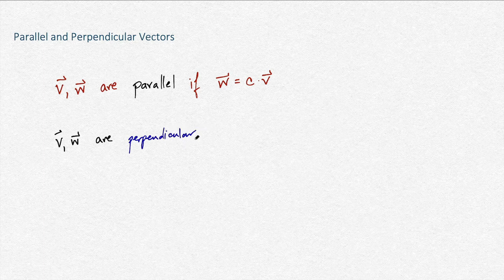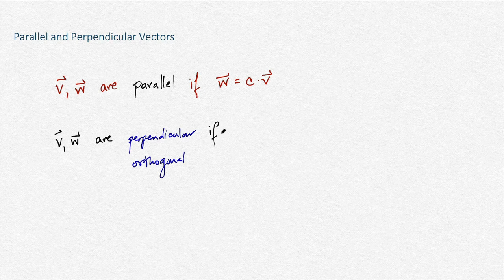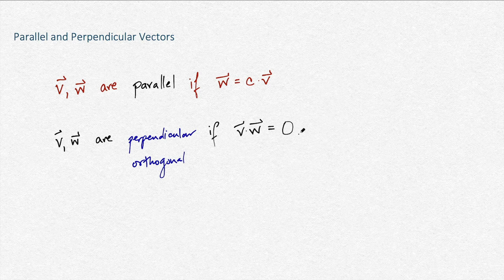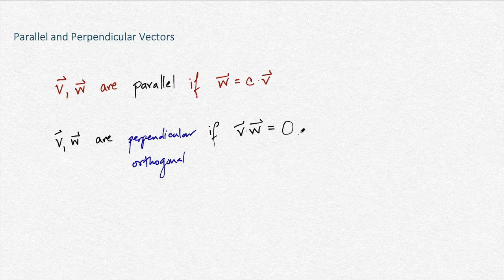We also say orthogonal. They mean the exact same thing if their dot product is equal to 0. So these are just quick ways to check without actually having to draw anything, but to check and verify that two vectors are parallel or perpendicular.